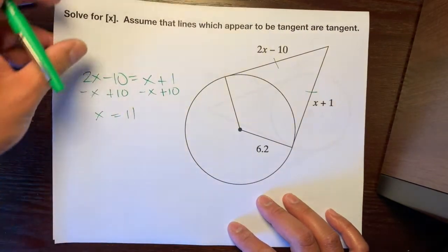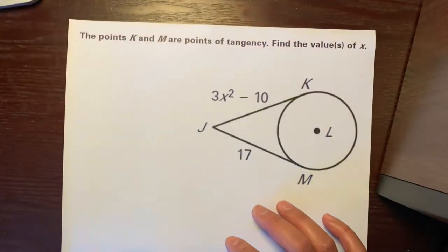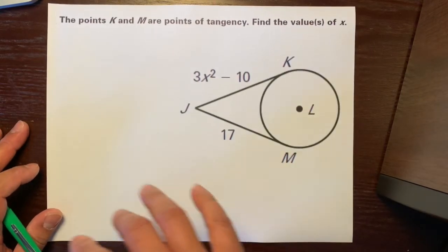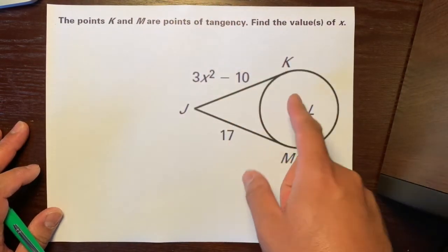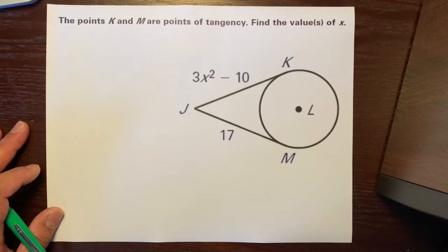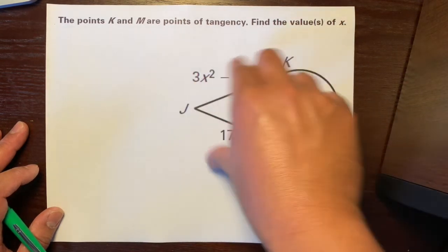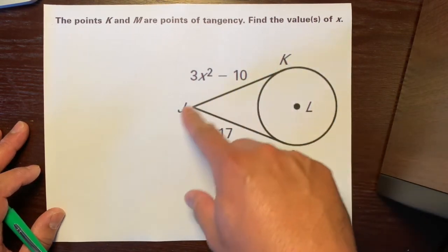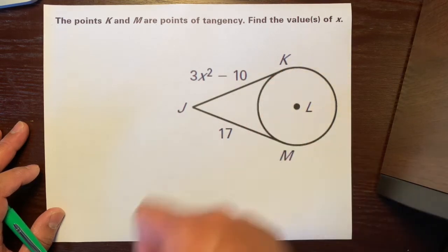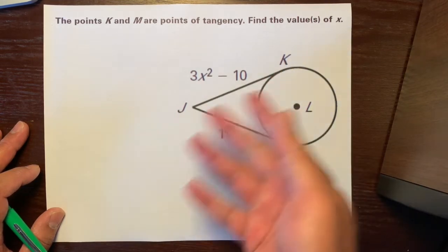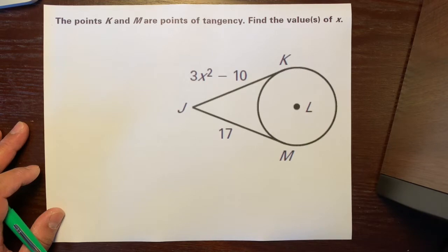Let me show you another example for this. Let's look at this one. The points k and m are points of tangency, find the value of x. So, again, we have two tangent lines. They give us information about the lengths of those two tangent lines. So, let's figure out what the value of x is.